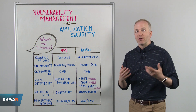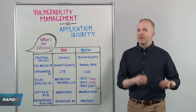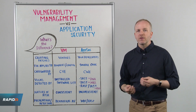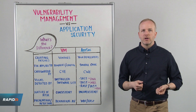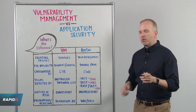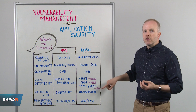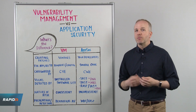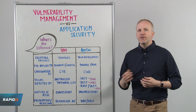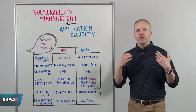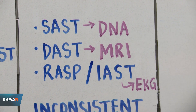DAST tools are a lot more like having an MRI scan, where you can look for direct evidence of a tumor or a disorder. The newest option out there is RASP, where you monitor the application and its traffic. Some RASP tools can detect and block malicious traffic. RASP tools are the equivalent of hooking yourself up to an EKG to monitor for indicators of a disease or disorder.